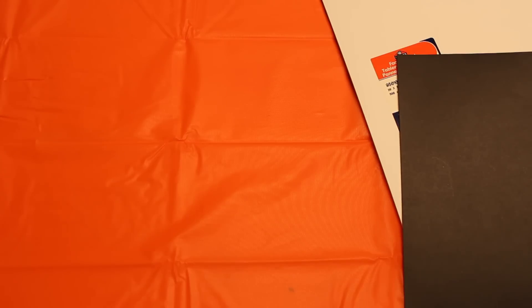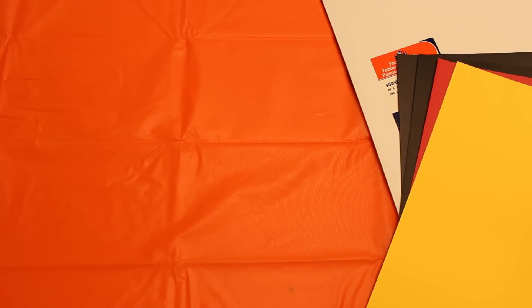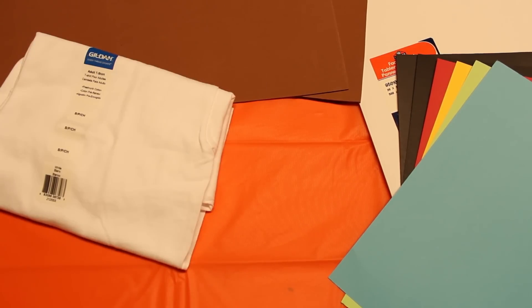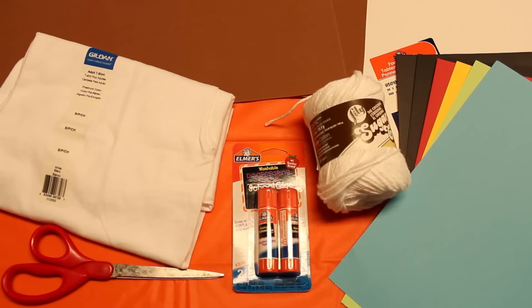Next we're going to do Instagram. You're going to need the white board, two pieces of black paper, a red, yellow, green, and blue cardstock, two pieces of brown paper or foam, one white shirt, yarn, glue sticks, and scissors.